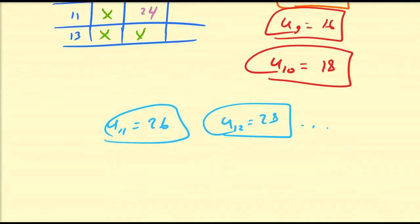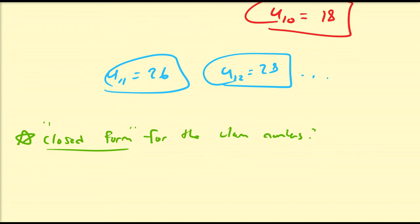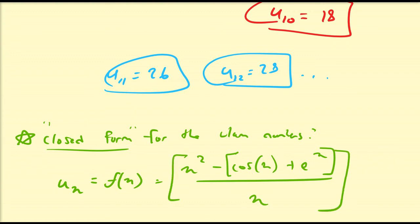So here is a question for you. Is there a closed form for the Ulam numbers? So when we say closed form, what do we mean? So we say that Un is equal to some function of n. So you may have like n squared minus cosine of n plus e to the n, like the greatest integer less than or equal to that, all divided by n. Like the floor of that or something like that. I mean of course this formula is just made up. But this formula has no meaning. At least not to me. But the question is, what is the closed form for the Ulam numbers?